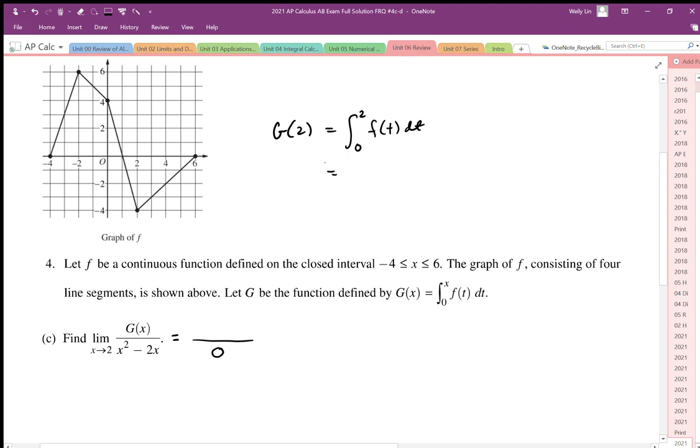When we take a look at the area from 0 to 2, we can see that that area is going to be positive 2 and negative 2. So that net area is 0, so then we can see that g of 2 is equal to 0.